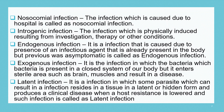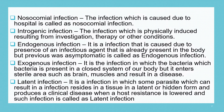Tenth is latent infection. It is an infection in which some parasites that can result in infection reside in a tissue in a latent or hidden form and produce a clinical disease when host resistance is lowered. Such parasites are present in the hidden form in our body, don't show any symptoms, and simply grow and multiply. But once the host resistance — that is, immunity — is lowered, they result in infection and can cause a clinical disease. Such infection is called latent infection.